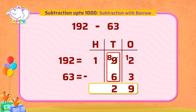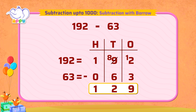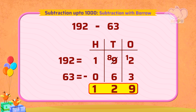Finally, in the hundreds place, we have a one and no number, so we take it as zero. One minus zero is equal to one. So 192 minus 63 is equal to 129.